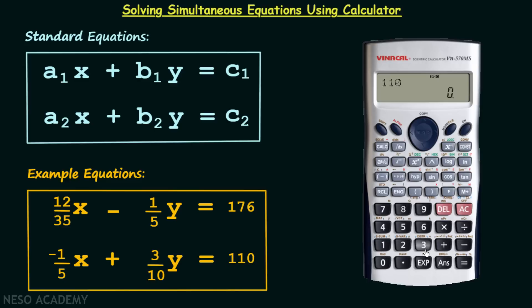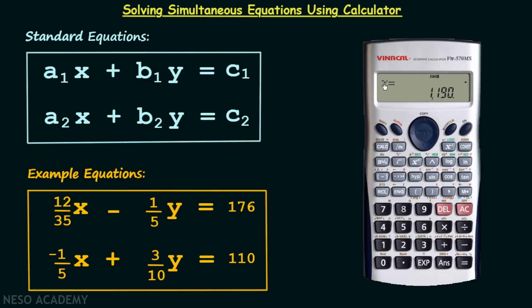So in this way we have input all the required values and now when I press equal to, x equal to, I will get the value of x which is our first unknown and you can see that x is equal to 1190. Now in order to obtain the value of y, the second unknown, we will press the equal to button once again. In this way we now have y equal to 1160. So I hope you now have the understanding of the process required to calculate the unknowns of the simultaneous equations using the scientific calculator.